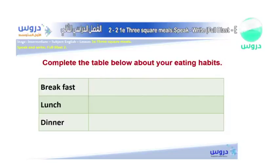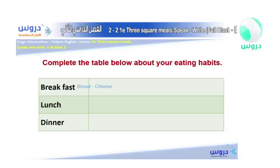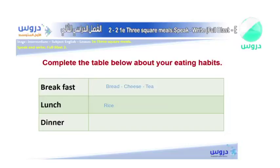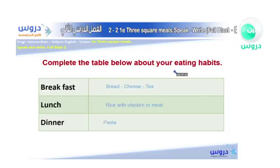Now let's complete the table about our own eating habits. What do we have for breakfast in Saudi Arabia? We have bread, cheese with bread, and of course tea — because we drink tea all the time in the morning. What about lunch? Lunch usually consists of rice with chicken or meat. And then for dinner, many people actually do have pasta. So in Saudi Arabia: for breakfast, bread, cheese, and tea; for lunch, rice with chicken or meat; and for dinner, some pasta.